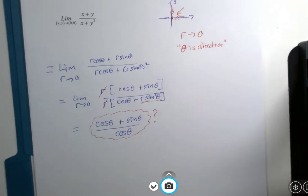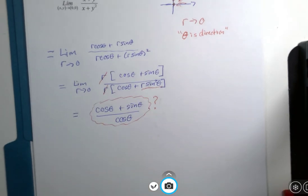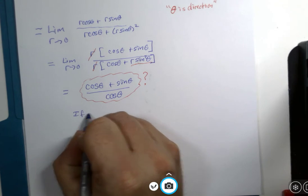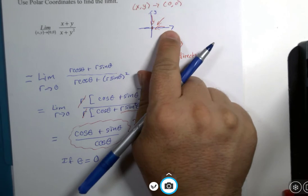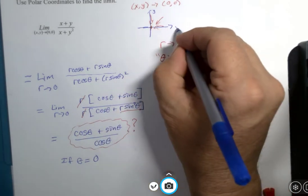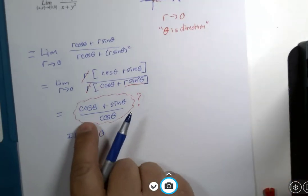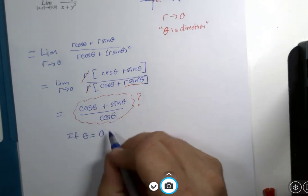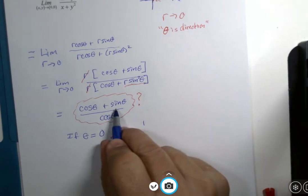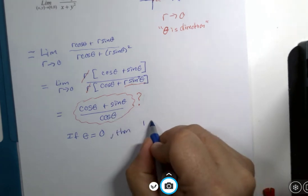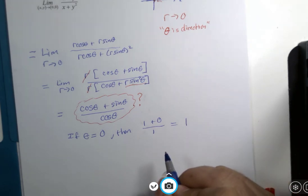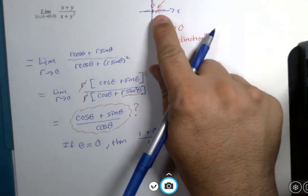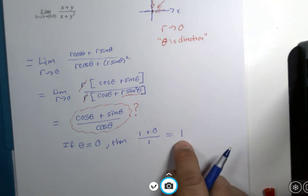And recall the concept is, from every direction that we approach the origin, we should get the same answer. So if theta is zero, we would be approaching the origin from along the x-axis. And if theta is zero, the cosine of theta would be one, and the sine of zero would be zero, so you're going to get one. I think you will find, if you did watch that previous segment, when we approached the origin along the x-axis, we got one as an answer.